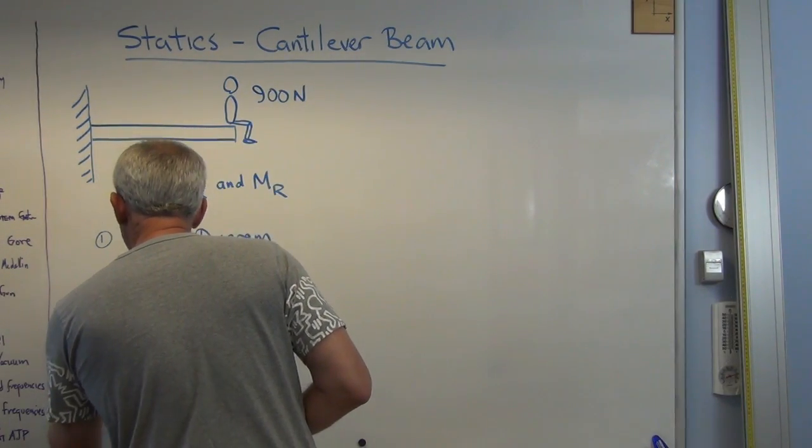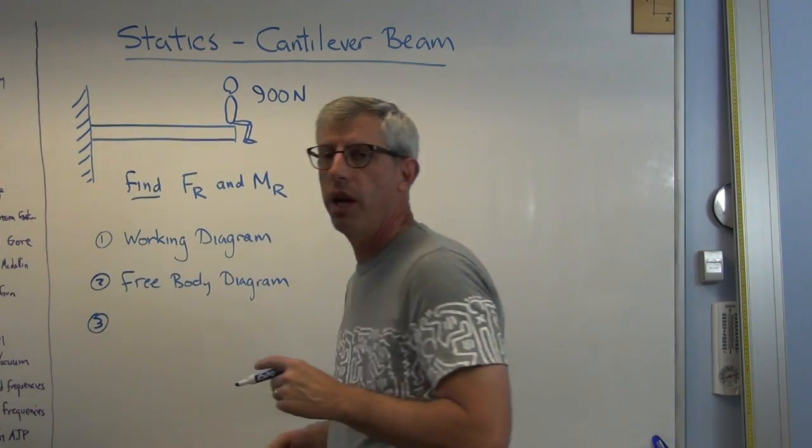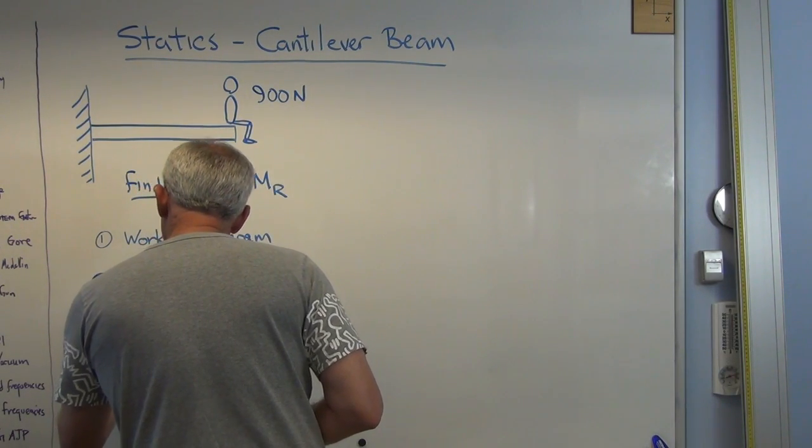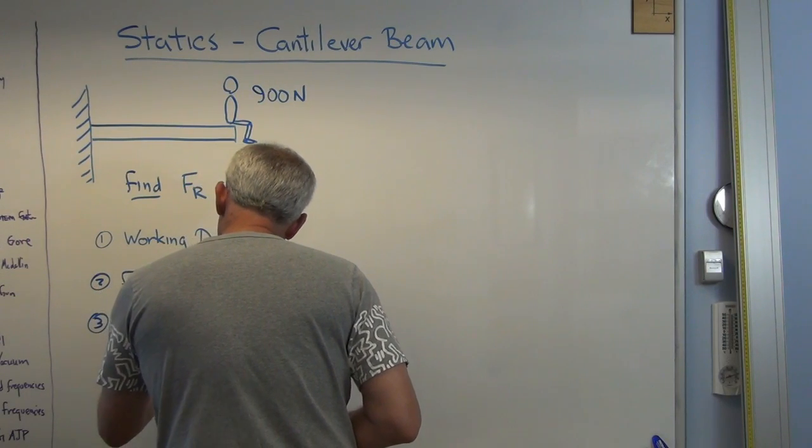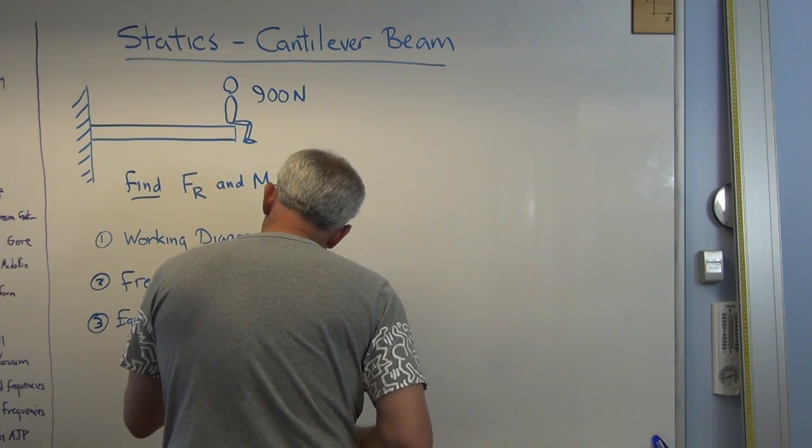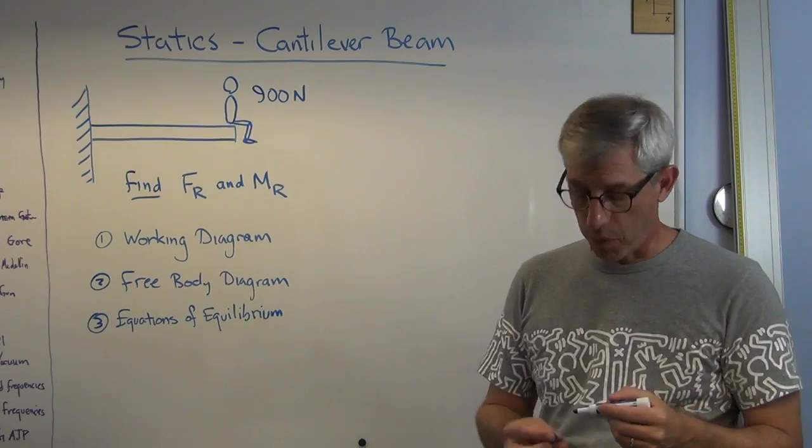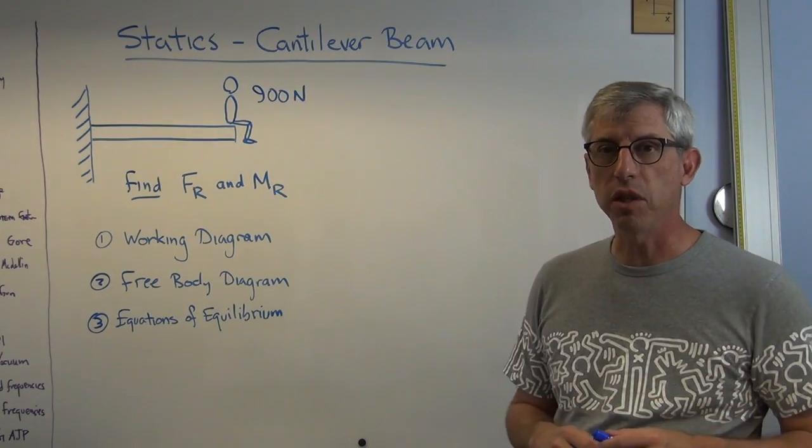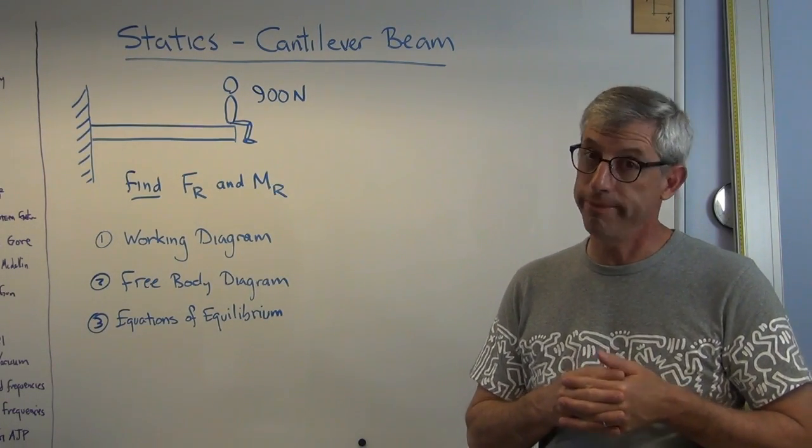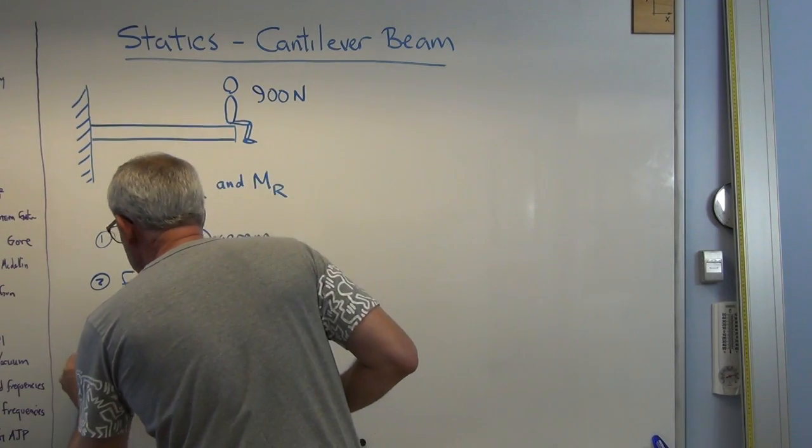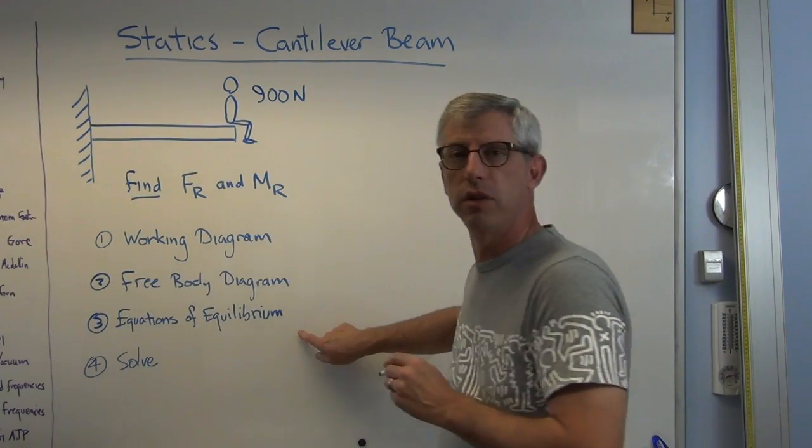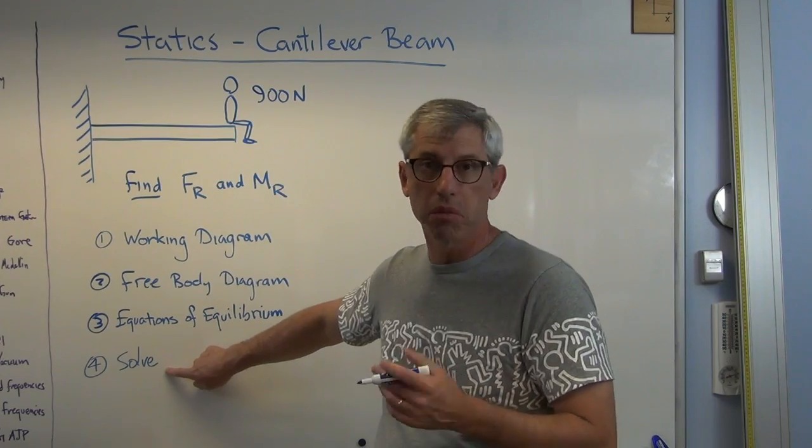What's step three? Equations of equilibrium, because remember, if we don't speak with numbers, it's just an opinion. I don't know about you, I want my bridges designed by people who know how to speak with numbers. So last thing, this is the obvious one, solve. Well, we've got equations right there. Let's solve for something. Seems reasonable.